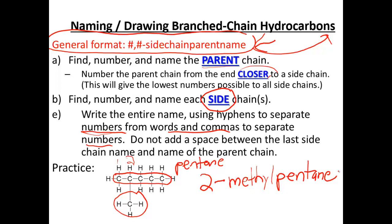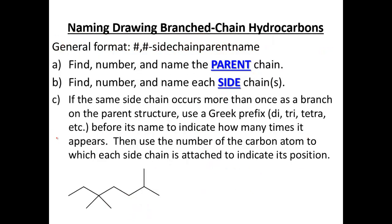Continuing on — remember the general format. You can find the parent chain and the sidechain. If the same sidechain occurs more than once as a branch, we're going to use the Greek prefixes di, tri, tetra in front of it to indicate how many times it appears.